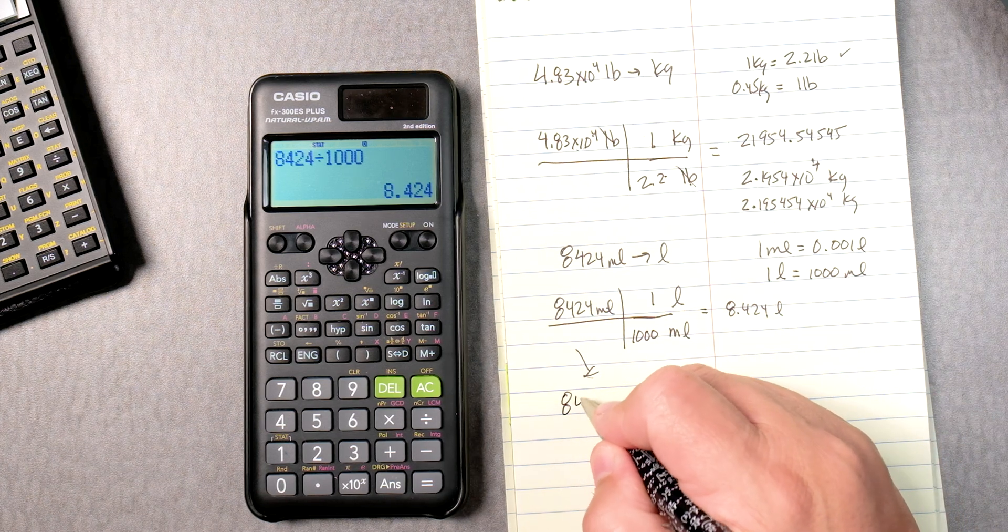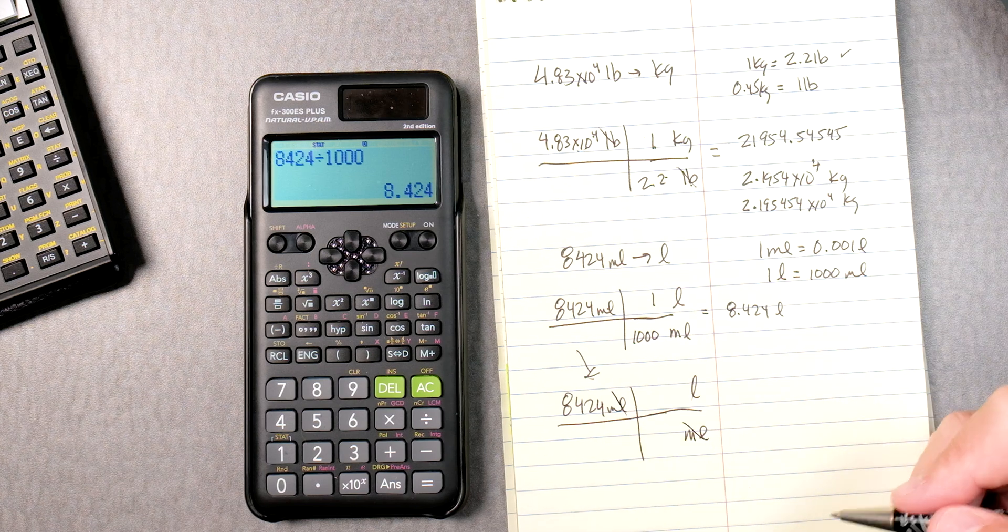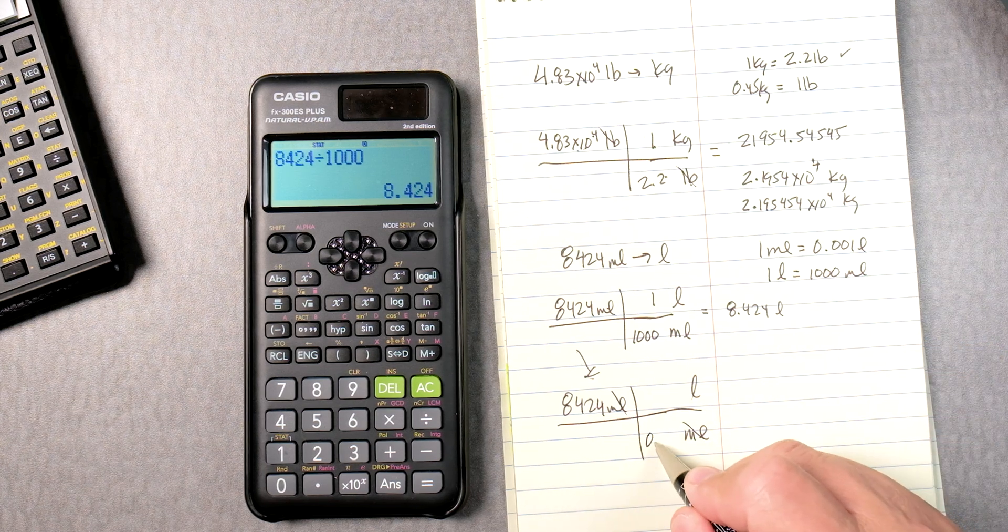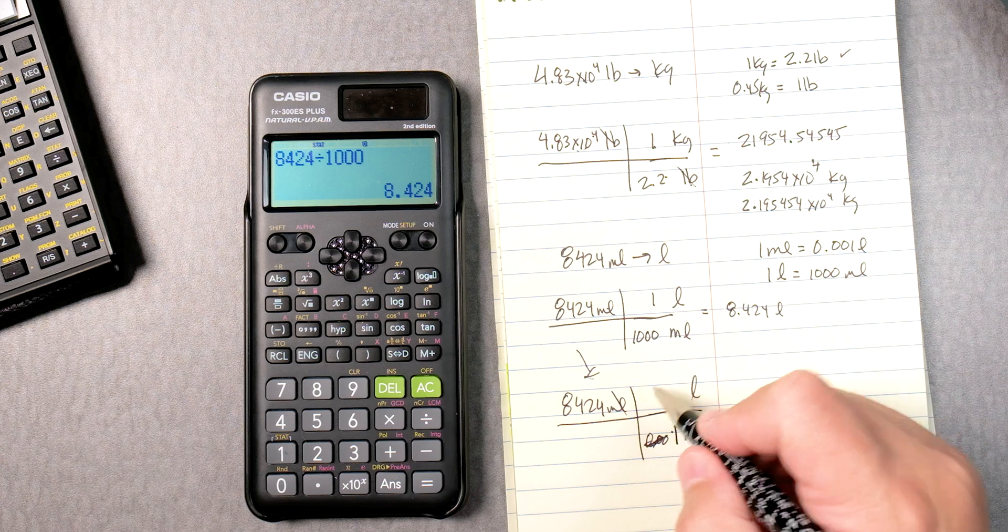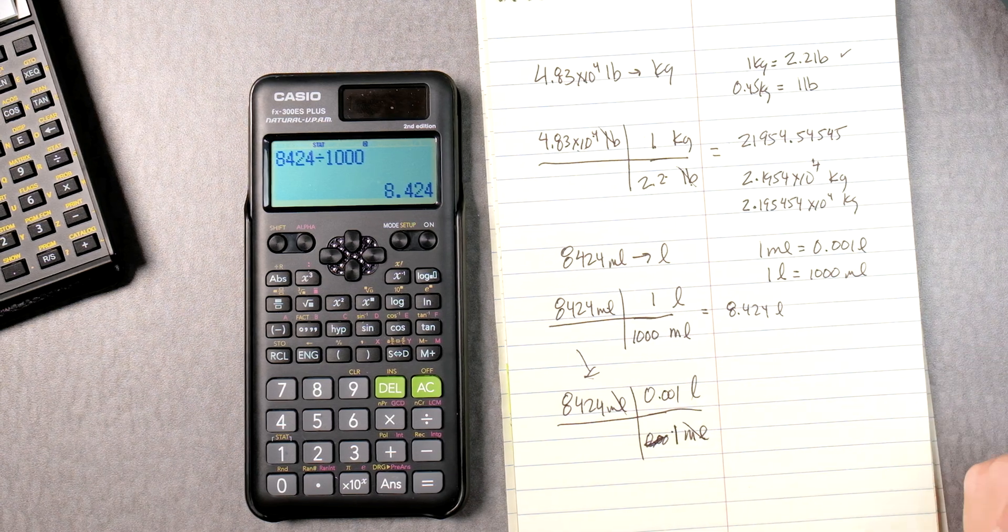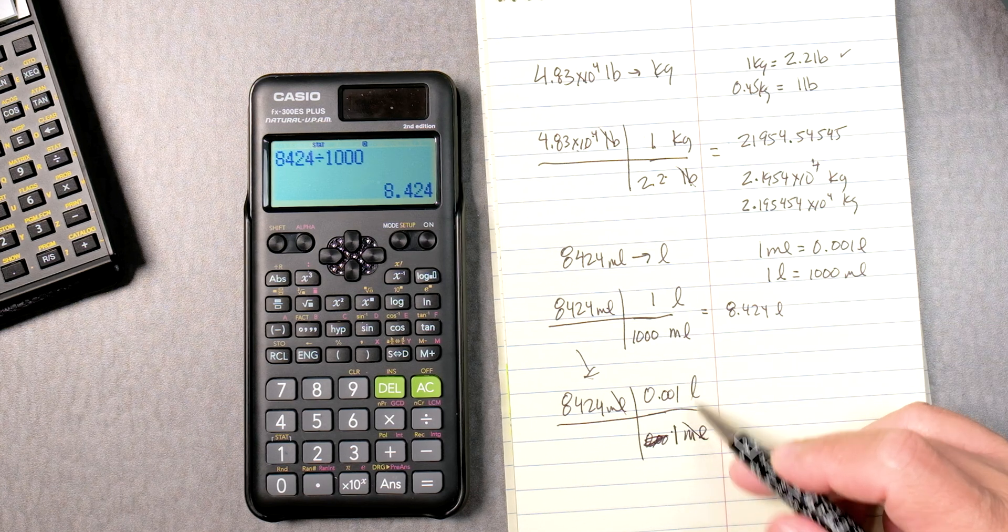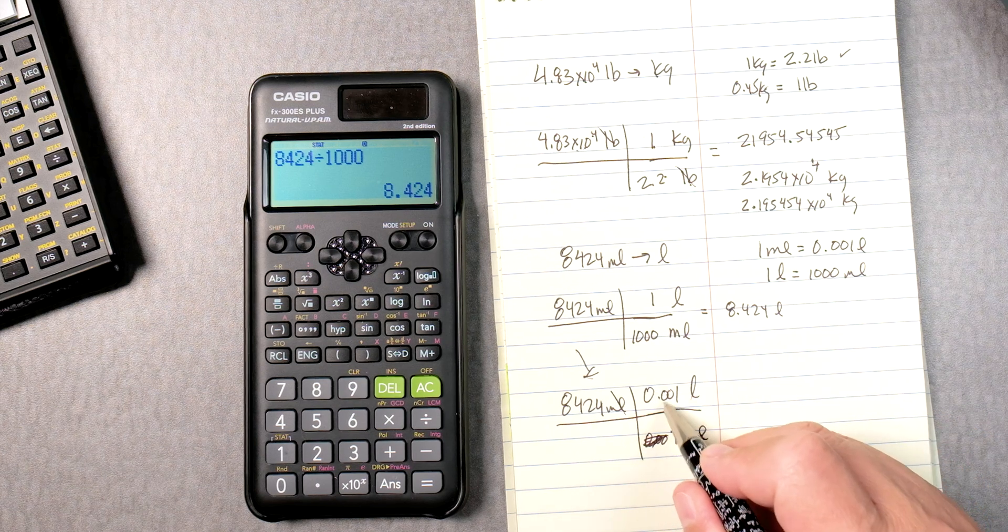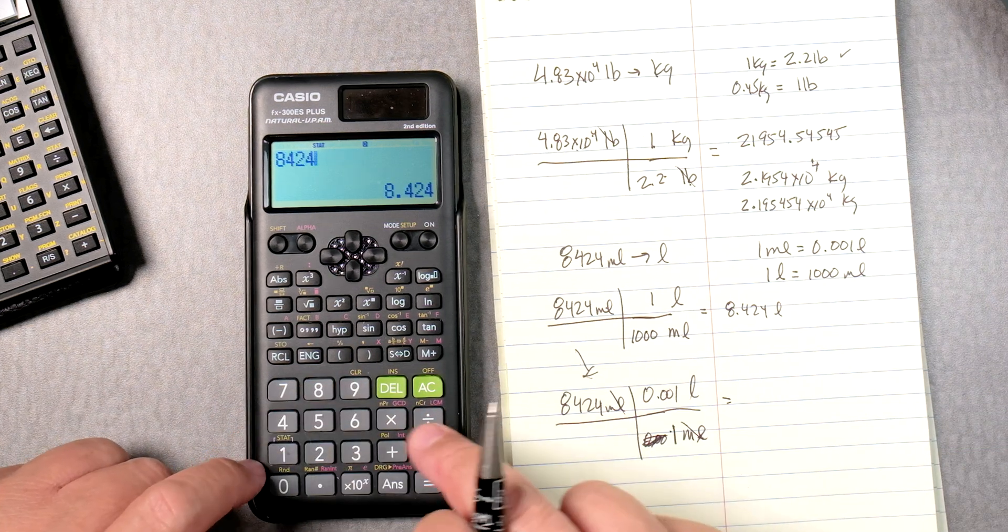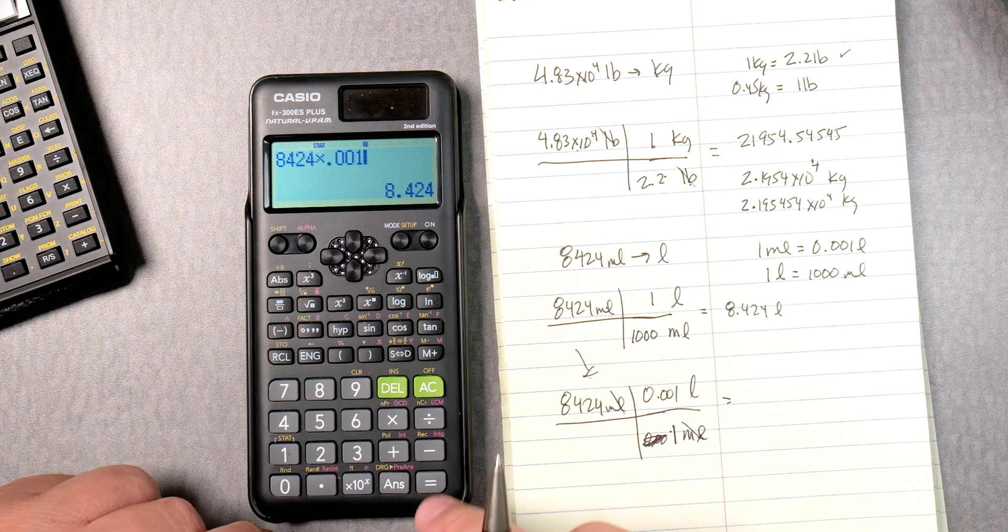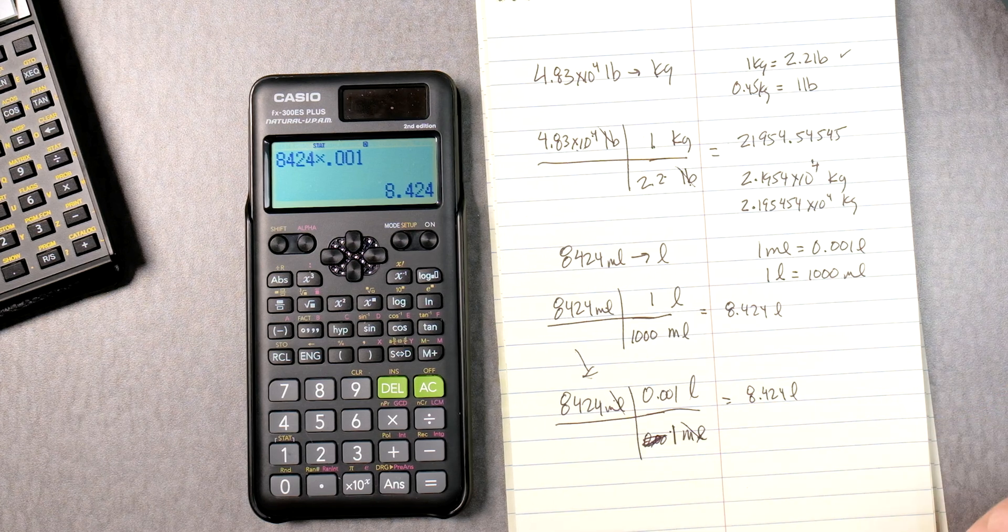Now, what about if you had 8,424 milliliters, and here we have milliliters, we have liters. So we can cancel out the milliliters. What about if we use the other conversion? 1 milliliter is 0.001 liters. We got to make sure we align the correct units. 1 milliliter is 0.001 liters. So, that's 8,424 times 0.001 equals 8.424 liters. The milliliters cancel. We get the same answer.